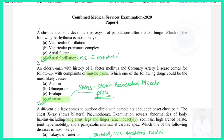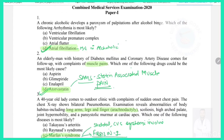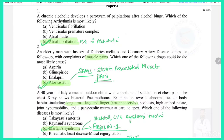Question 1: A chronic alcoholic develops a paroxysm of palpitation after an alcohol binge. Which arrhythmia is most likely? In alcoholics, the most common arrhythmia after an alcohol binge is atrial fibrillation. In normal conditions it can be ventricular fibrillation, but in alcoholics it is atrial fibrillation.